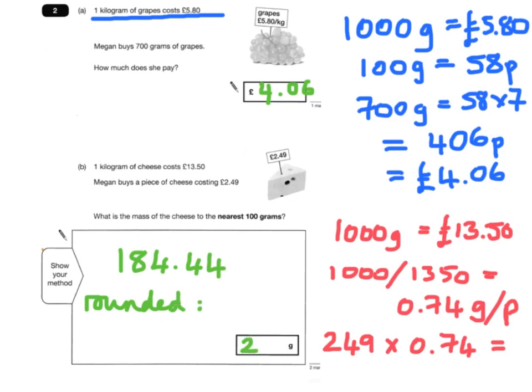That's the mass. And it says rounded to the nearest hundred. So 184 rounds up to 200 grams. Do you agree with that?